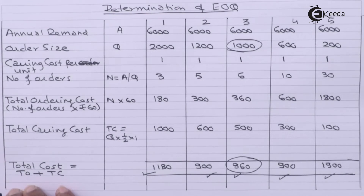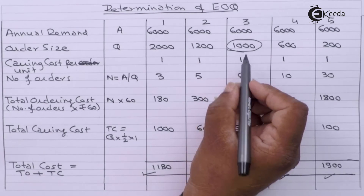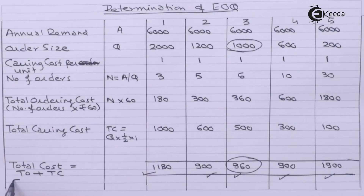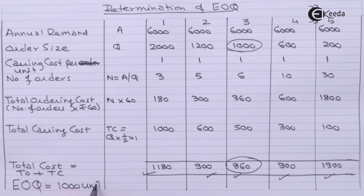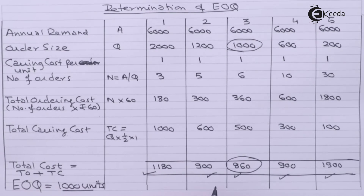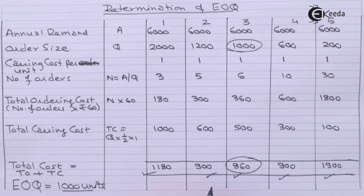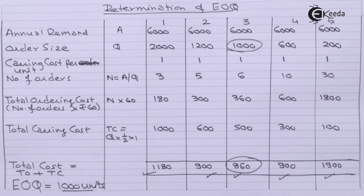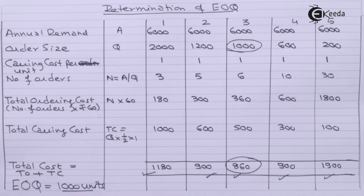The lowest total cost is Rs. 860, which relates to an order size of 1,000 units. So, the economic order quantity as per the tabular method is determined to be 1,000 units. As per the tabular method, the economic order quantity is 1,000 units, determined by the lowest cost of Rs. 860.